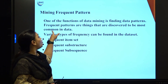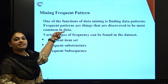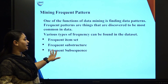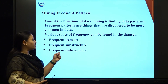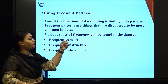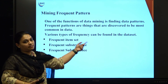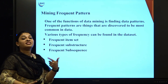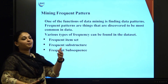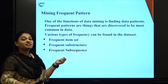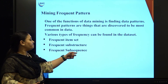Frequent patterns are things discovered to be most common in data — the common, regular ones. There are three types of frequencies found in data sets: frequent item sets, frequent substructures, and frequent subsequences. Frequent item sets refers to the data items we frequently use. Frequent substructures refers to how frequently we use a substructure within a program. Frequent subsequences refers to how frequently we use a sequential pattern in the data.